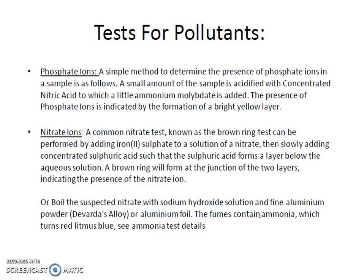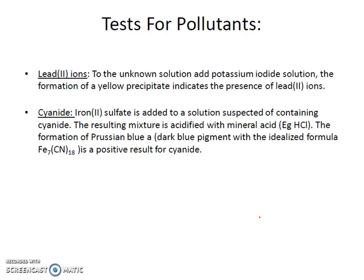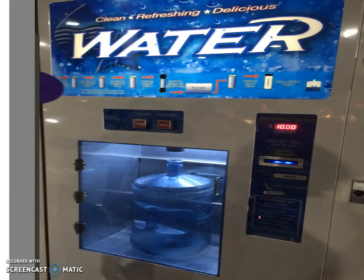Here are the tests for pollutants: for phosphate ions, use ammonium molybdate with concentrated nitric acid. For nitrate ions, you can use the brown ring test. For lead, use potassium iodide. For cyanide, use the test as stated.